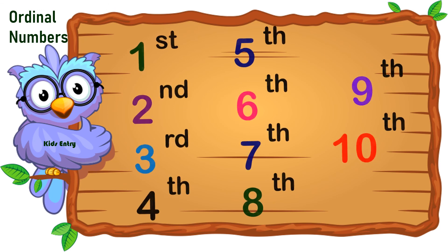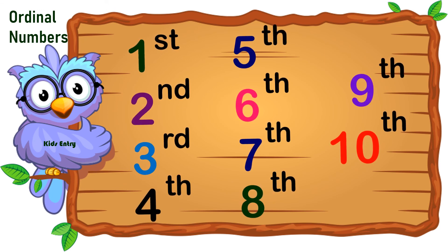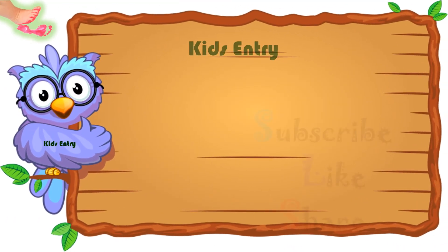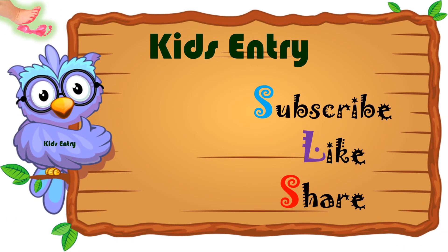Ordinal numbers is a number that shows the position or the rank of something in a list. Subscribe to Kids Entry and enjoy Kids Entry videos.